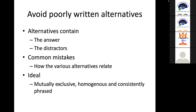Also avoid poorly written alternatives. Alternatives should contain the correct answer and the distractors. We need to provide distractors, but they must be chosen well — not just any random distractor. A common mistake is how the various alternatives relate to the answer and to the question. Ideally, alternatives should be mutually exclusive, homogeneous, and consistently phrased.